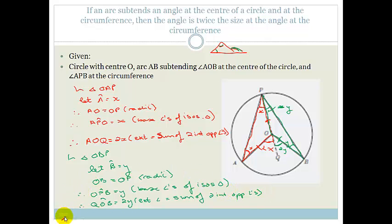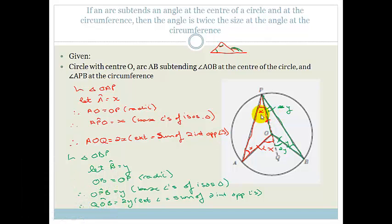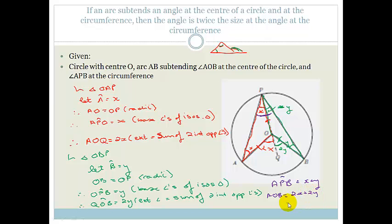Now bringing it all together: the whole angle APB equals X plus Y. And angle AOB equals 2X plus 2Y, which is 2 times APB. Therefore we've proven that the angle at the center is twice the size of the angle at the circumference.